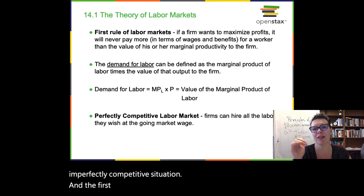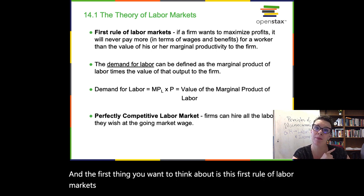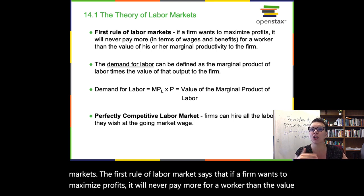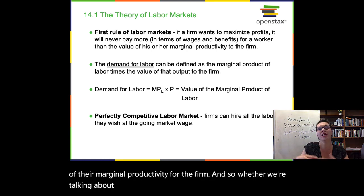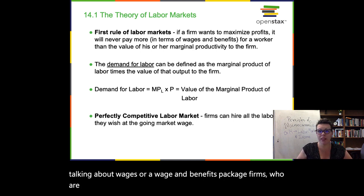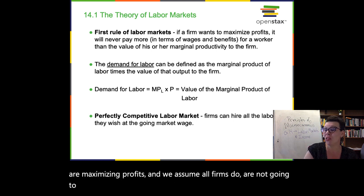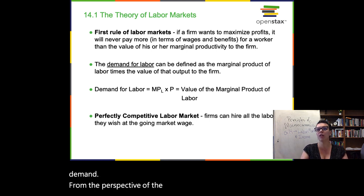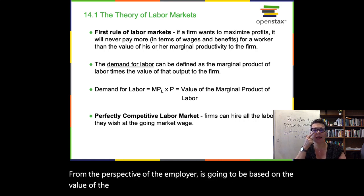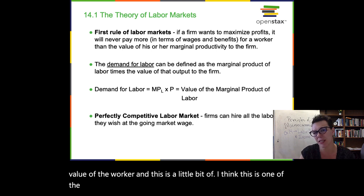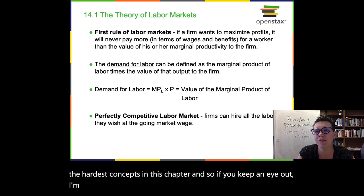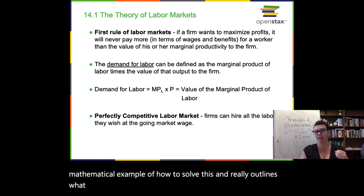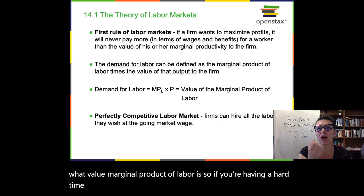The first rule of labor markets says that if a firm wants to maximize profits, it will never pay more for a worker than the value of their marginal productivity for the firm. Whether we're talking about wages or a wage-and-benefits package, firms who are maximizing profits — and we assume all firms do — are not going to pay you more than your worth as an employee. Labor demand from the perspective of the employer is going to be based on the value of the worker. I'm going to put together a video that goes through a mathematical example of how to solve this. If you're having a hard time understanding this, reach out and check out that video.